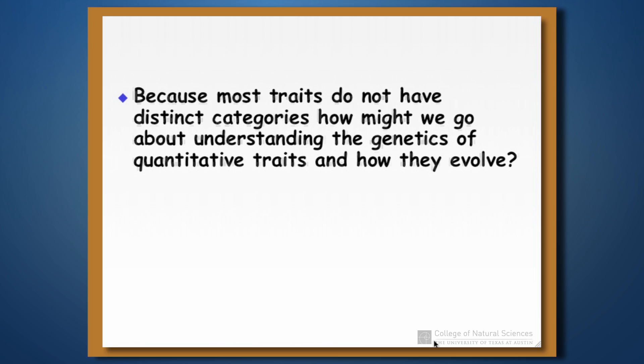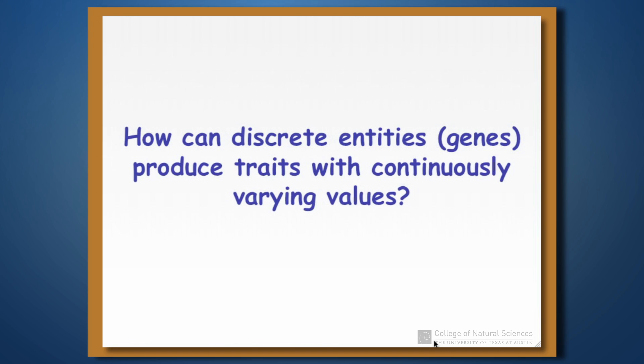We know that most traits don't fall into distinct categories. How do we actually go about understanding how those traits are going to evolve, especially when we don't necessarily know what the exact genes are that control the traits? This raises a conundrum because genes, by definition, fall into discrete combinations of genotypes. So how do we get something that falls into discrete combinations to give us continuously varying traits or values of a trait?